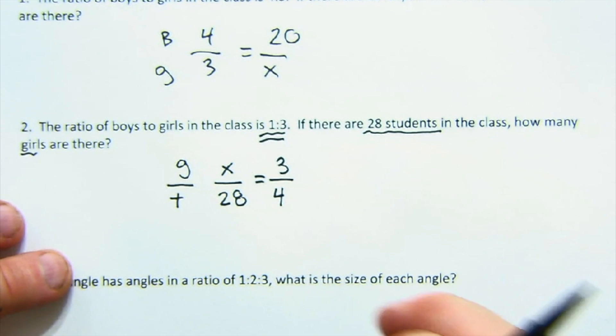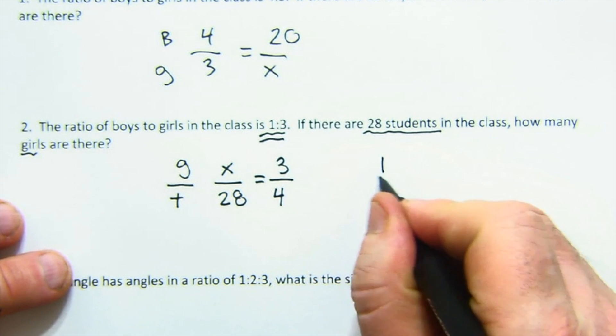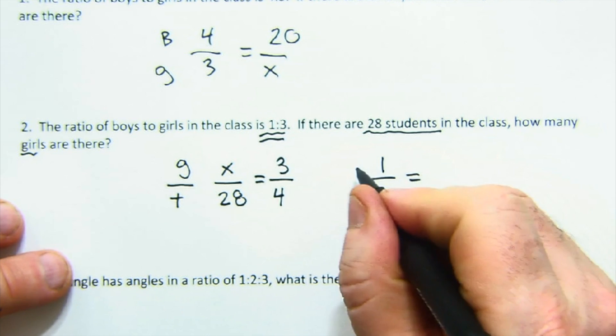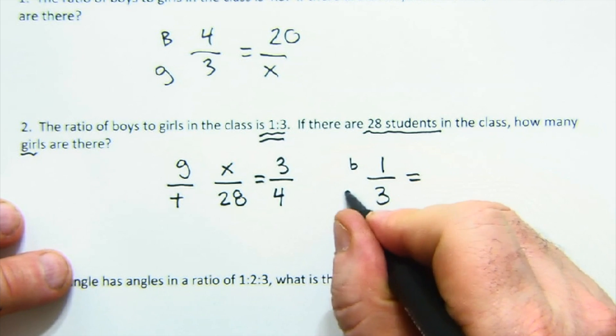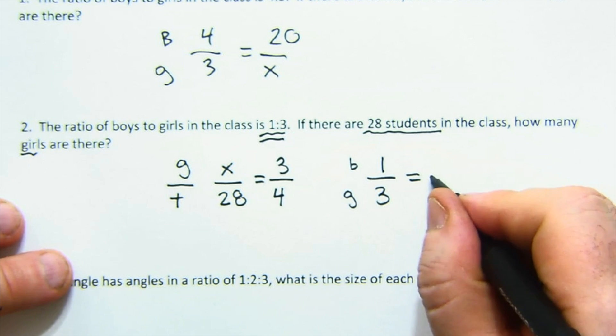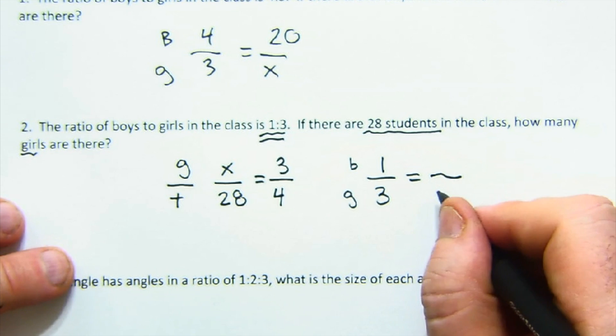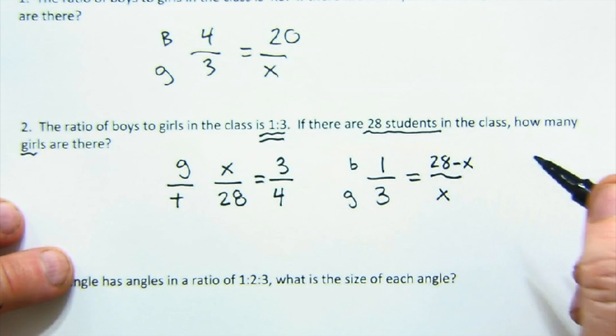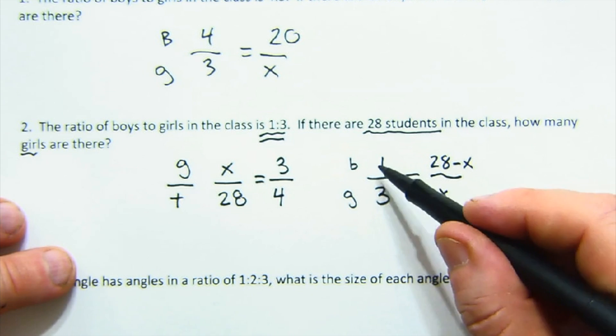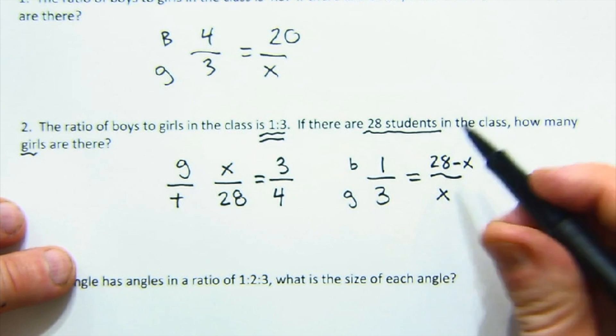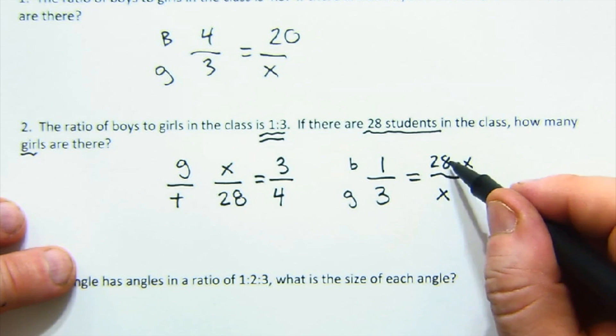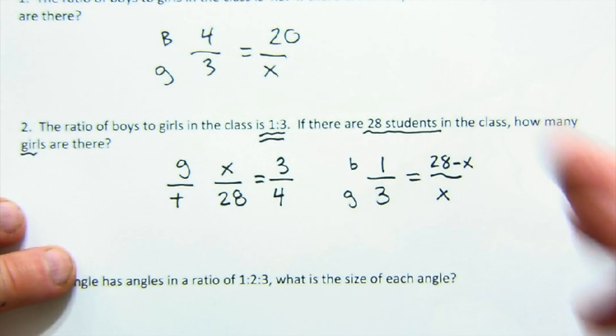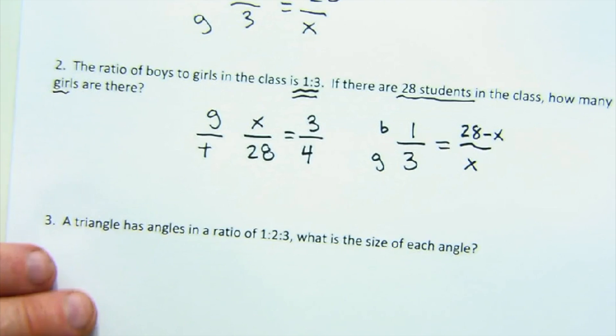Another way you could do this is with the idea of 1 to 3 - boys to girls. And over here you could say that the girls are x and the boys are 28 minus x. So this also would find the identical answer. Boys to girls. Boys, how many are left over out of the 28? This would also work nicely. There's often more than one way to do it.